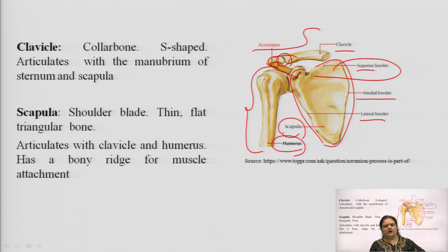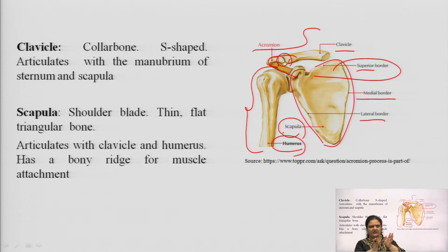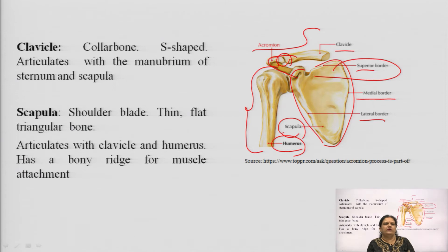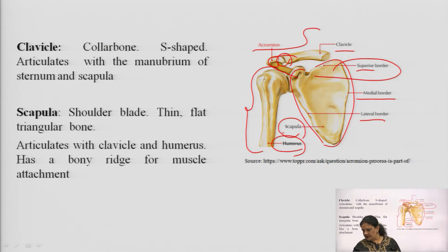We have two clavicles — right and left — and two scapulae on both the right and left back shoulders. The scapula is also known as the shoulder blade; it is thin and flat, roughly triangular in shape. It articulates with the clavicle and humerus with the help of the acromion, and it has a bony ridge for muscle attachment. This completes the shoulder girdle.